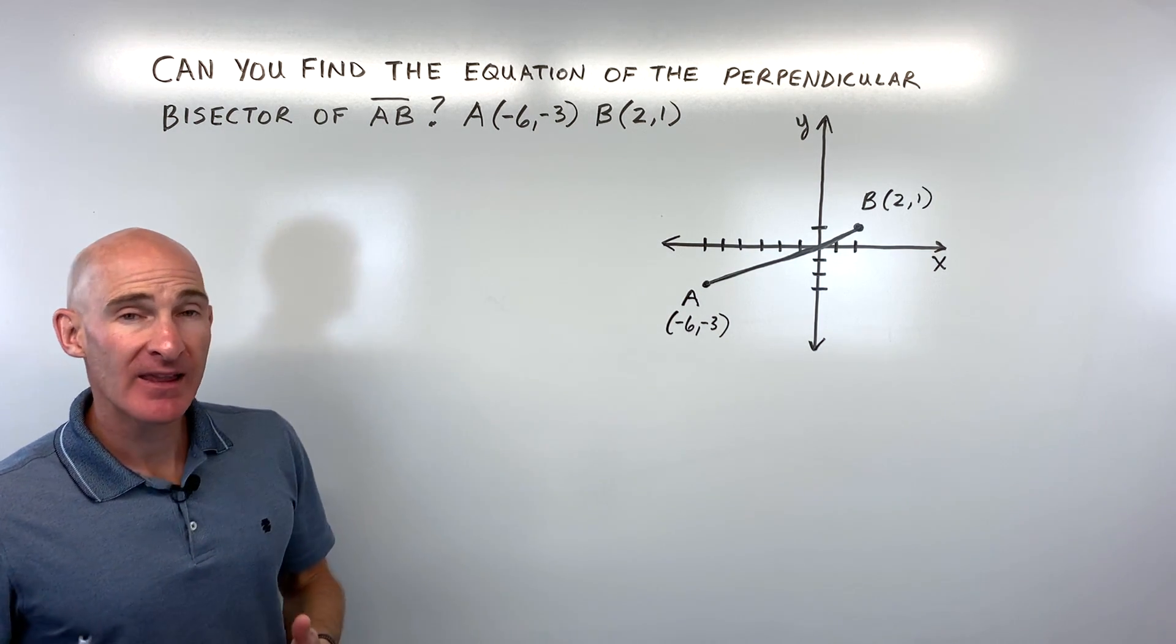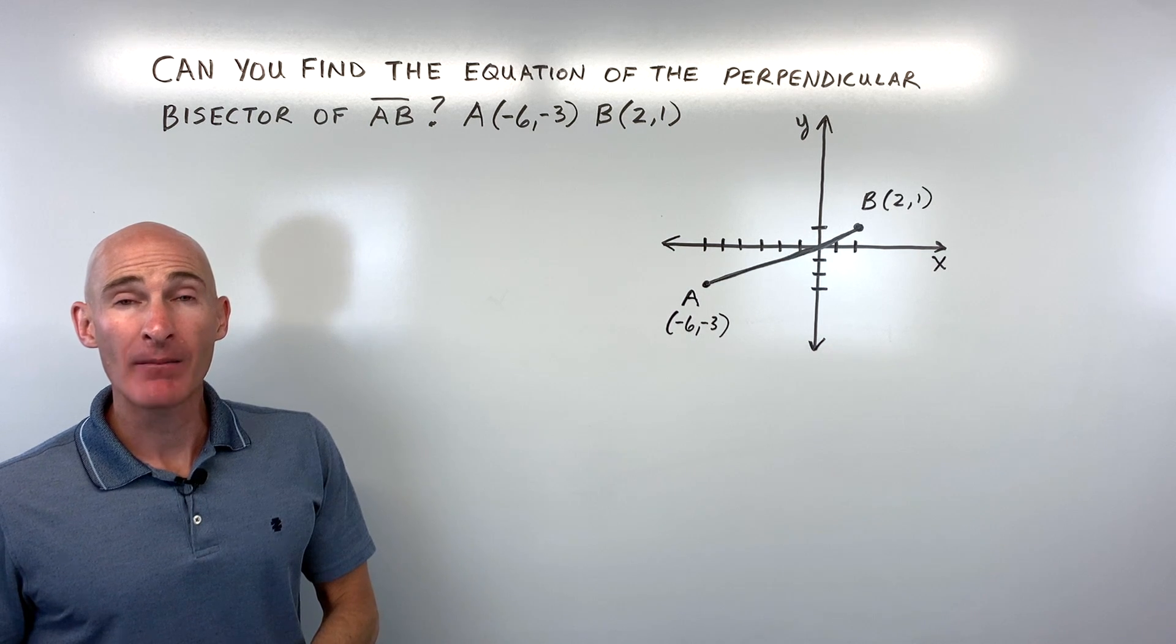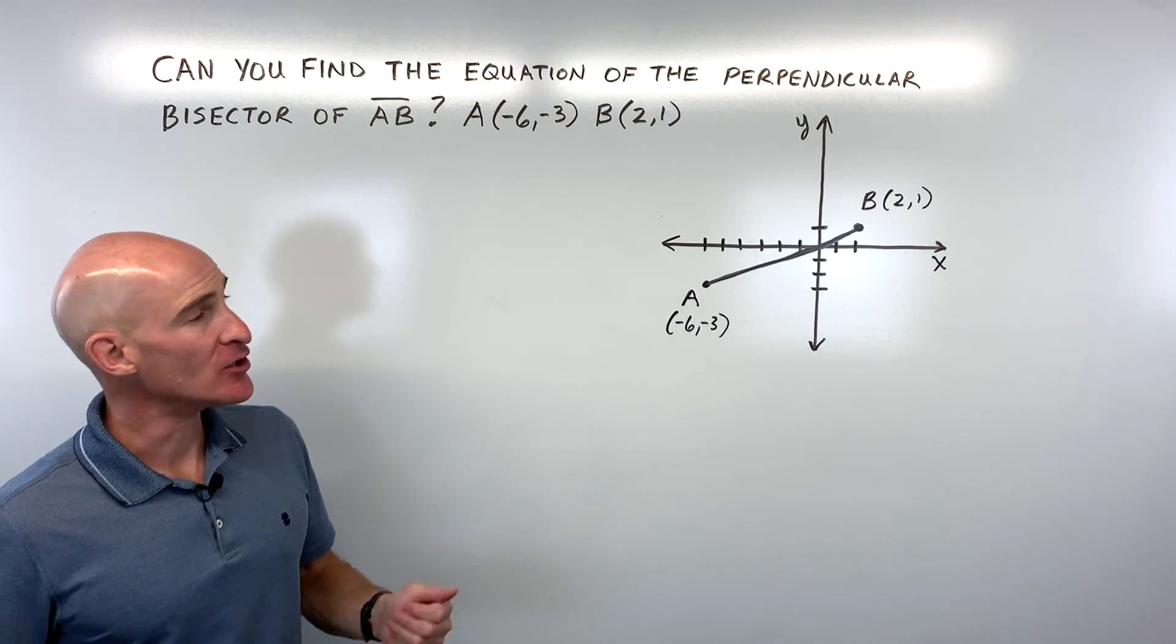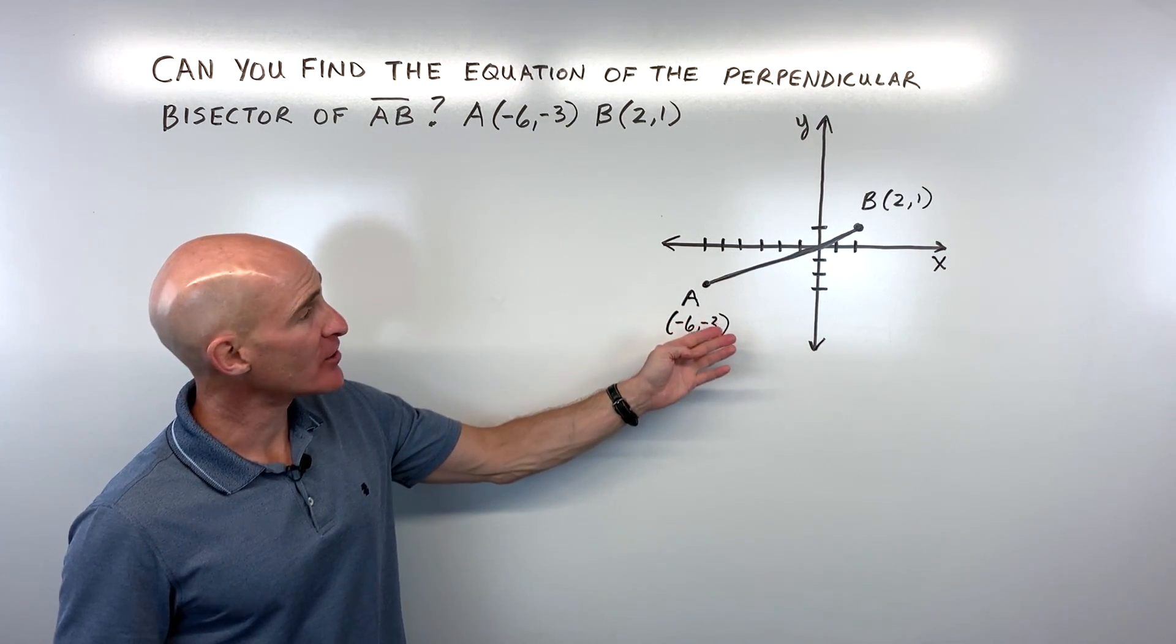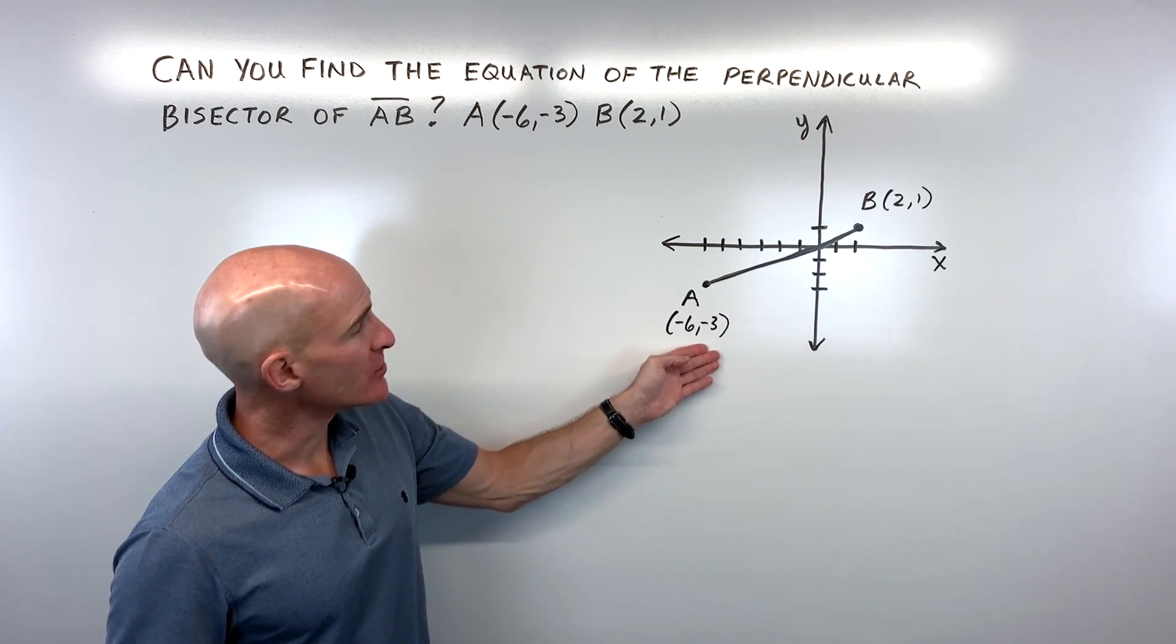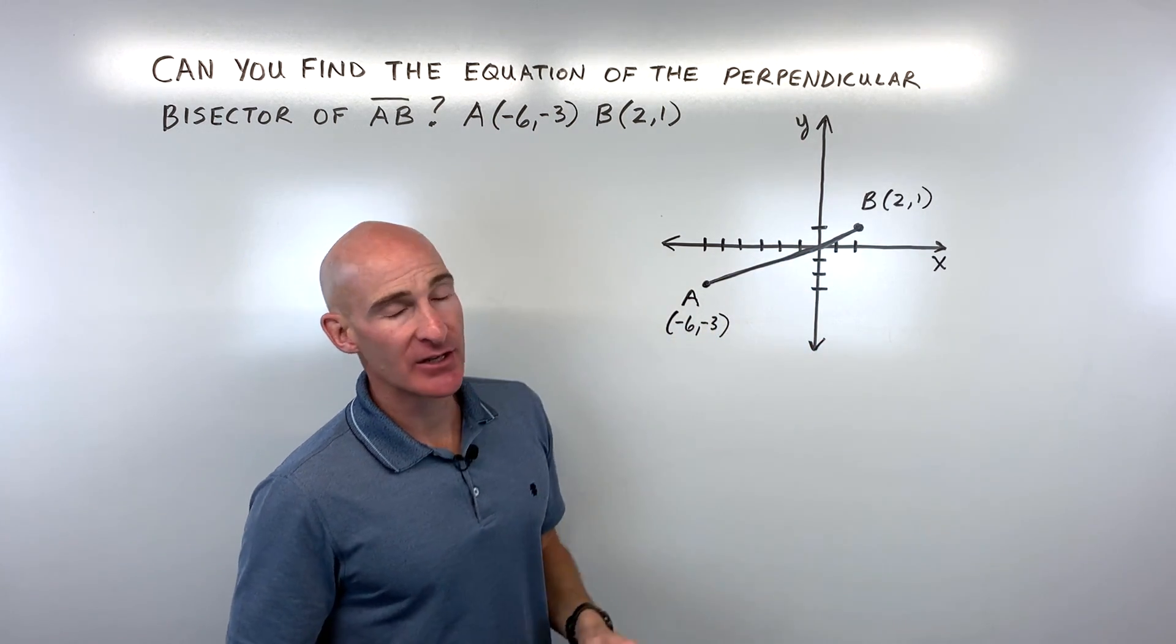The first thing I like to do when I'm doing a word problem is, if possible, I like to try to draw a diagram. So that's what I've done here is I've plotted the two points here, negative six, negative three, and two, one.